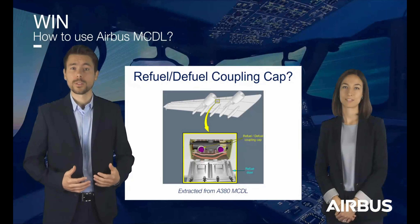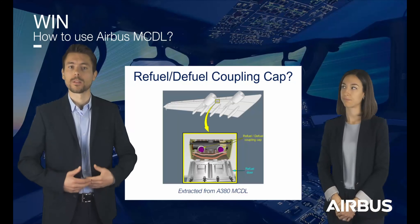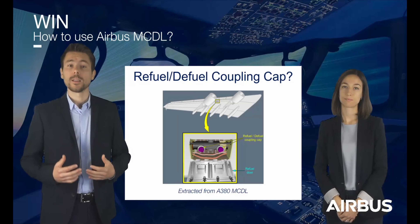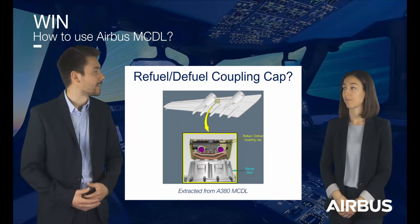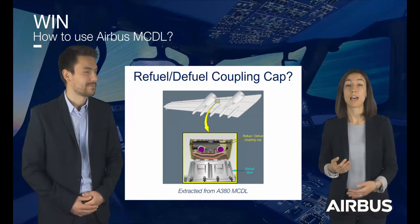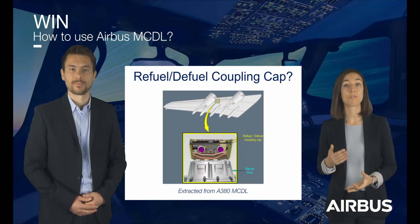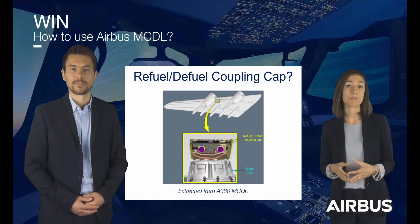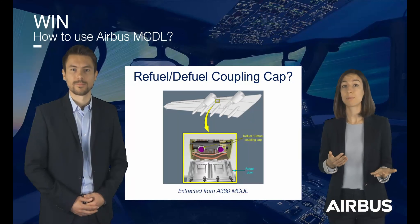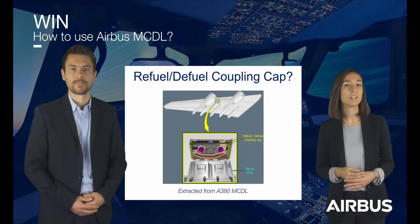If we consider that the MCDL items only refer to airframe parts with an aerodynamic impact, why is the refuel-defuel coupling cap included in the MCDL? That is a good point. Actually, to complement the definition, Airbus also considers in the MCDL all parts that protect the aircraft from the external environment, for example liquid ingestion. As a result, a refuel-defuel coupling cap is a protection from the external environment and it is included in the MCDL.